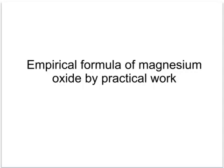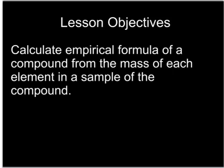This tutorial explains how some practical work can be done in order to calculate the empirical formula of a compound such as magnesium oxide. This supports the part of the specification which says to calculate the empirical formula of a compound from the mass of each element in a sample of a compound.